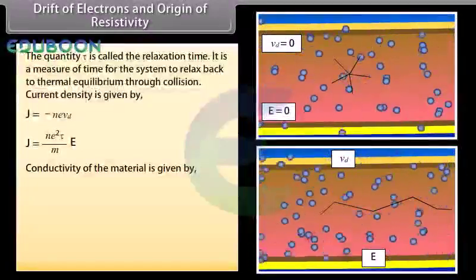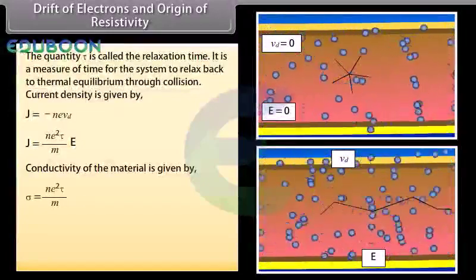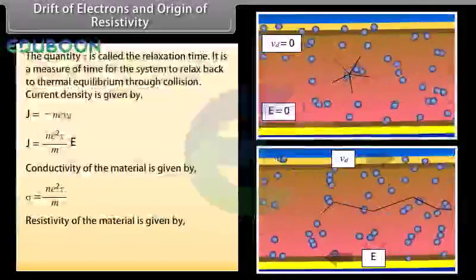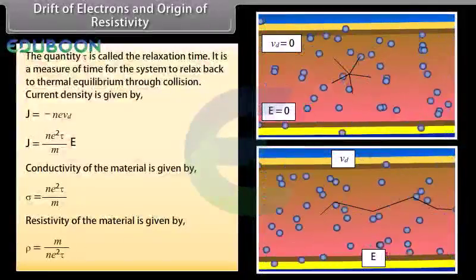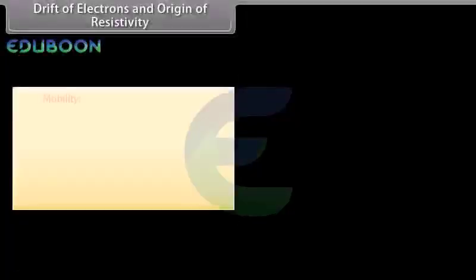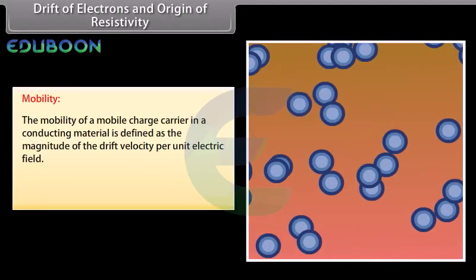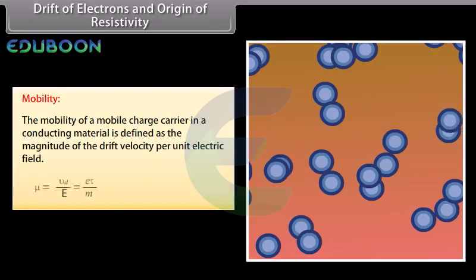The conductivity of the material is given by σ = ne²τ/m, and the resistivity is given by ρ = m/(ne²τ). Mobility: The mobility of a mobile charge carrier is defined as the magnitude of the drift velocity per unit electric field. Mobility μ = Vd/E = eτ/m.